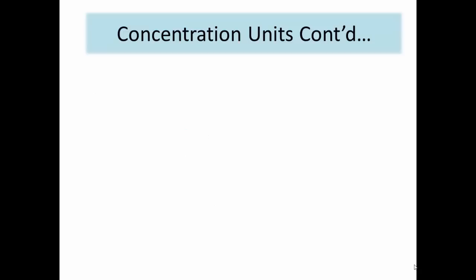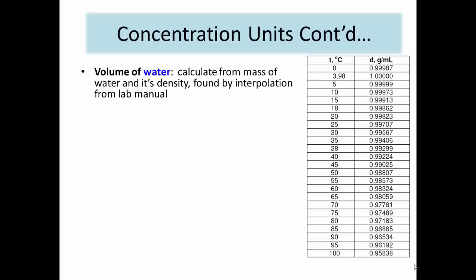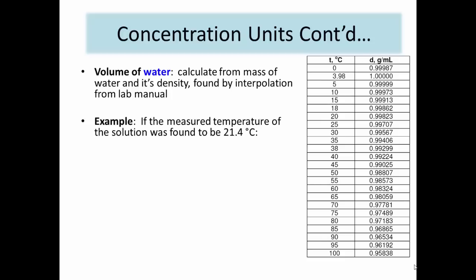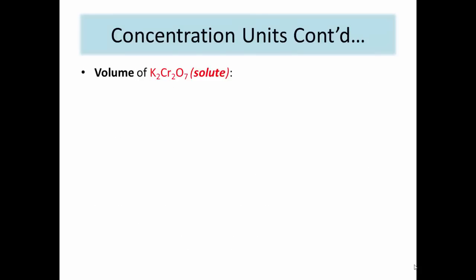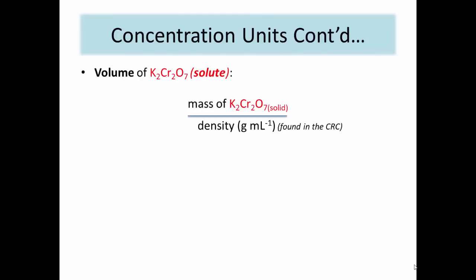Table 9-1 in your lab manual lists the density of water depending on temperature, and will be used to find the volume of water in the solution. If the temperature in the lab is between two values on the table, a calculation like the example shown will be made. Find the two temperatures the actual temperature falls between, calculate the absolute difference between the corresponding densities and divide by the difference between the two temperature values. This value is then multiplied by the difference between the actual temperature and the lower of the two table temperatures, giving the density difference, which is then subtracted from the density of the lower temperature value. The volume of solid potassium dichromate can be found by dividing the mass of solids by the density of the molecule, which can be obtained from the CRC Handbook.